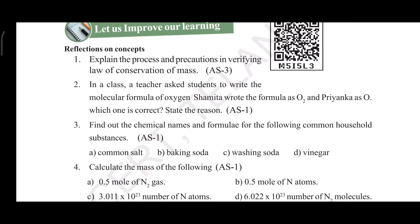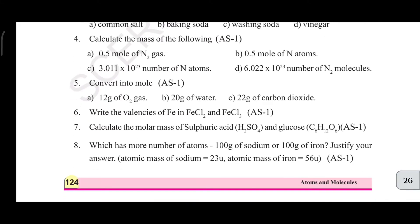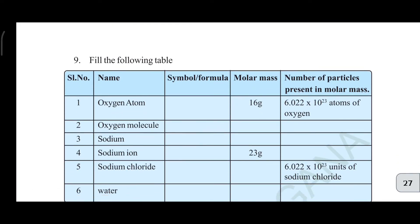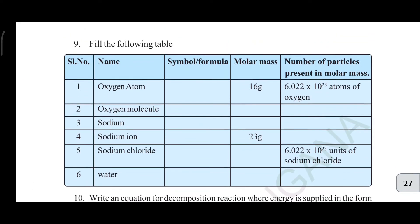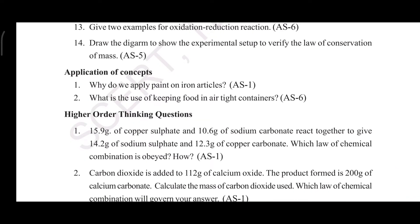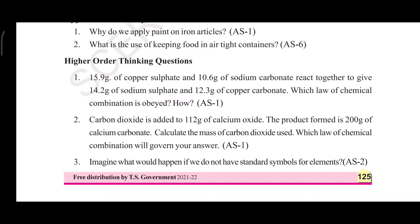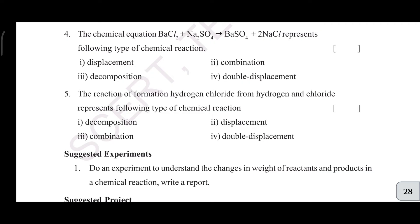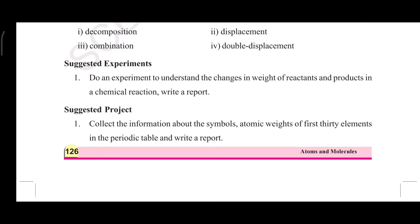'Let Us Improve Learning' means question and answer only. In 'Reflection of Concept' there are a total of eight questions. Then 'Fill in the Following Tables' has 14 questions. 'Application of Concept' has two questions, 'Higher Thinking Question' has three questions, and 'Multiple Choice Question' has five questions. Suggested experiments and suggested project work each have one.